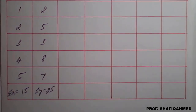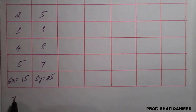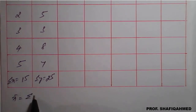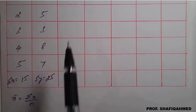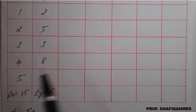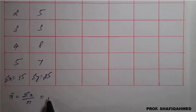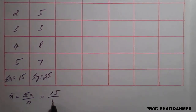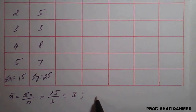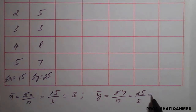Next, we calculate X̄ and Ȳ. X̄ equals summation of X divided by N. N is the number of data points, which is 5. So X̄ = 15 divided by 5 = 3. Similarly, Ȳ equals summation of Y divided by N: 25 divided by 5 = 5.